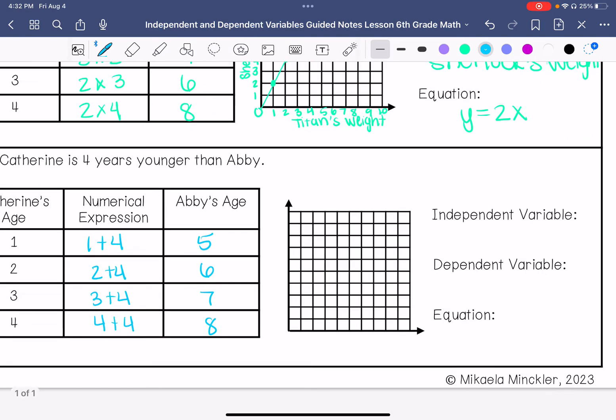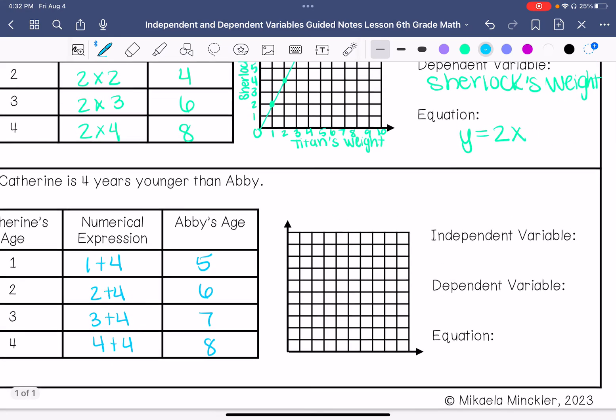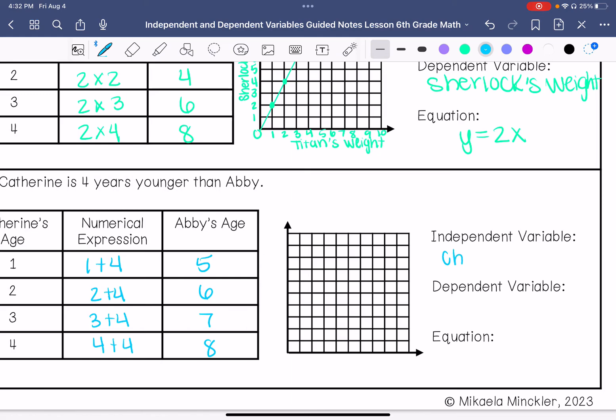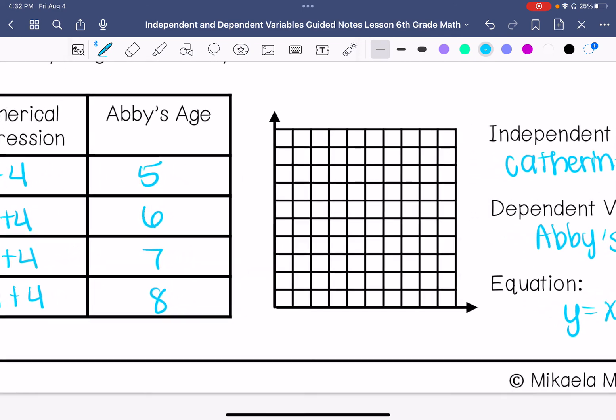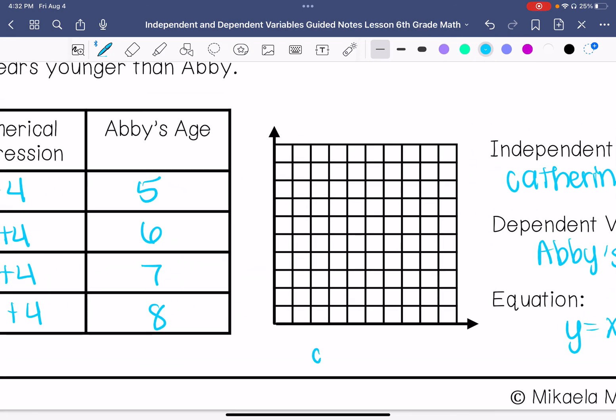My independent variable is going to be Catherine's age. My dependent variable is going to be Abby's age. The equation is y equals x plus 4.